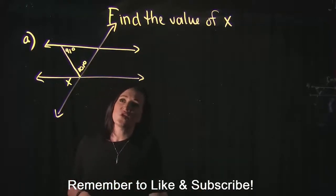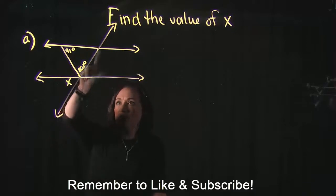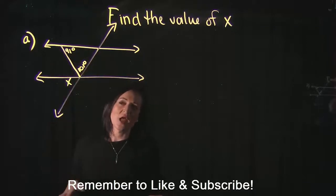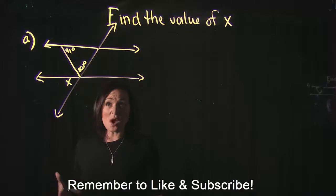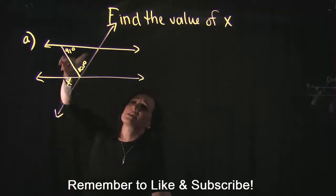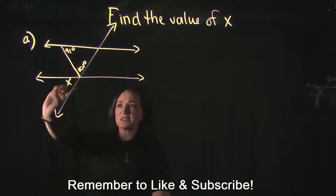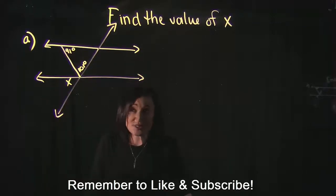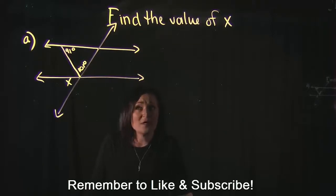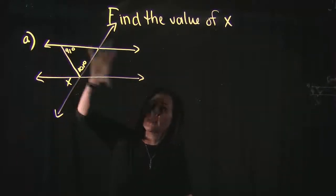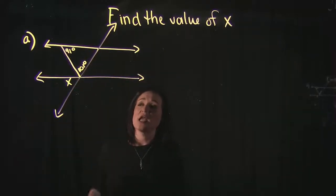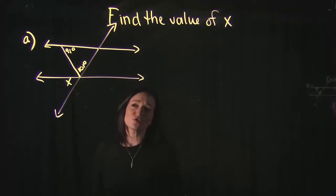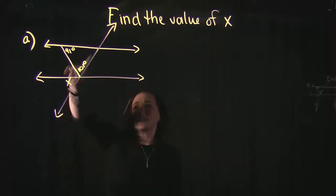I also notice there is a triangle in the middle of all of this, and we know two of its angles. The problem is asking us to find the value of X. To do that, we're going to use some properties of triangles and properties of parallel lines to backtrack and figure out what X is. The first thing I'll do is find the missing angle of the triangle.